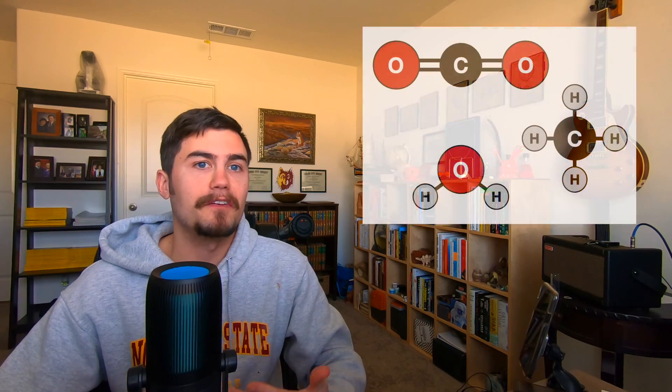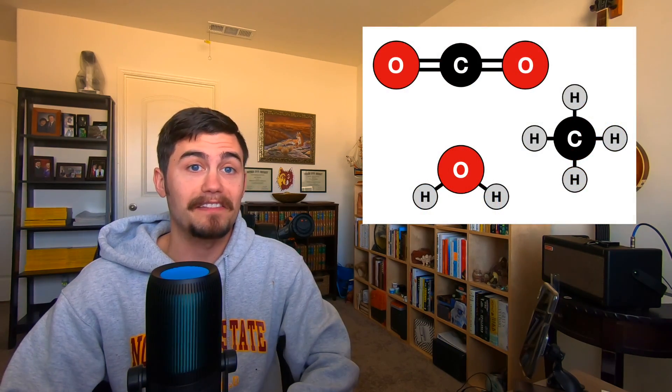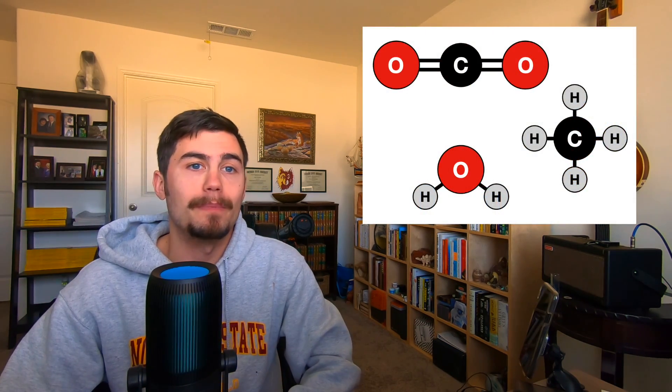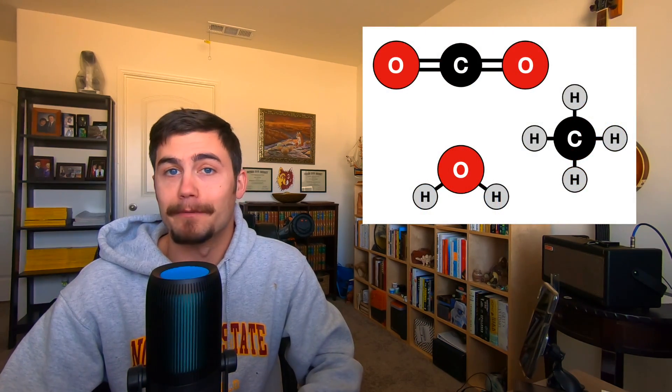Welcome to science class. Today we are going to learn how the atmosphere is heated, how that heat is transferred, and why temperatures in different regions vary. There are three major components to this. One is the structure of the atmosphere itself. Certain molecules are better at absorbing heat than others. These are the greenhouse gases, such as water vapor, carbon dioxide, and methane.